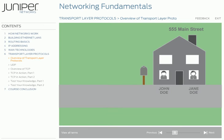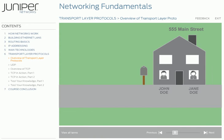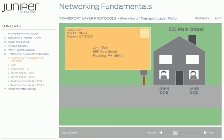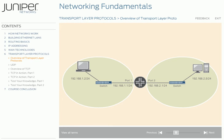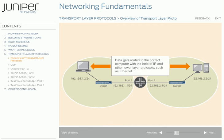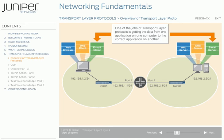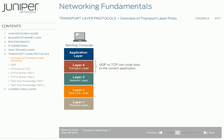Let's return to our postal analogy for just a moment. Earlier we saw that once a letter gets delivered to the correct house, its journey is not complete, because more than one person can reside at the same address and the recipient's name must also be present in the address on the envelope. The same is true when data arrives at a destination computer. One of the jobs of transport layer protocols is getting the data from one application program on one computer to the correct application program on another. Transport layer protocols enable true end-to-end, or application-to-application, communication.